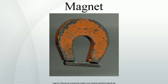A magnet's magnetic moment, also called magnetic dipole moment and usually denoted m, is a vector that characterizes the magnet's overall magnetic properties. For a bar magnet, the direction of the magnetic moment points from the magnet's south pole to its north pole, and the magnitude relates to how strong and how far apart these poles are. In SI units, the magnetic moment is specified in terms of A·m². A magnet both produces its own magnetic field and responds to magnetic fields.